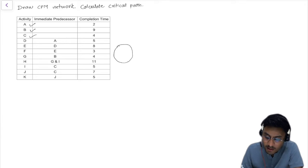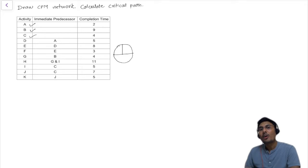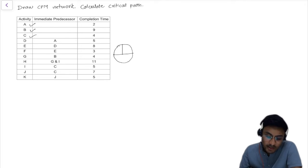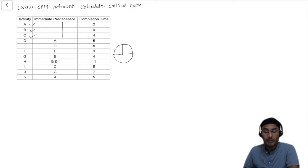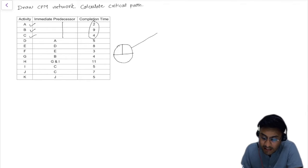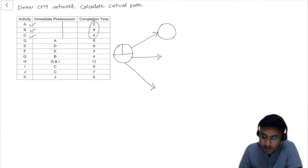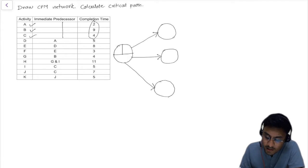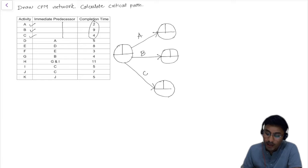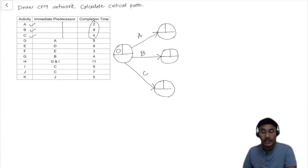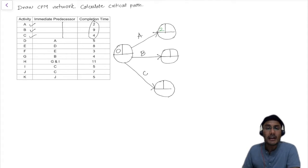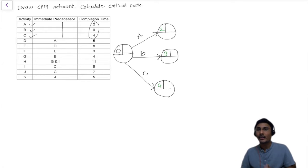First, draw a circle which will represent the earliest start, latest finish, and the float. I am drawing this diagram to get the calculations done at the same place. A, B, and C are the three tasks that don't have any predecessor but they have a completion time. Activity A has a completion time of 2, B has a completion time of 9, and C has a completion time of 4. All three activities have a start time of zero.